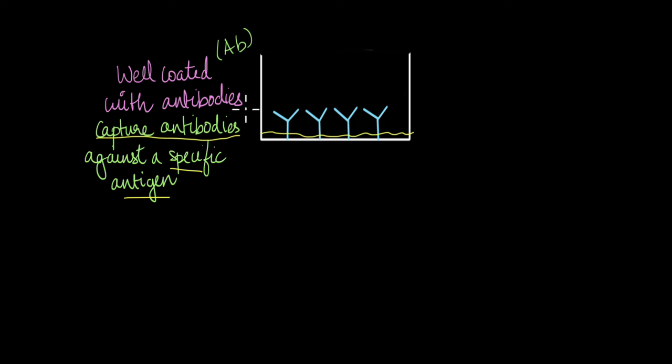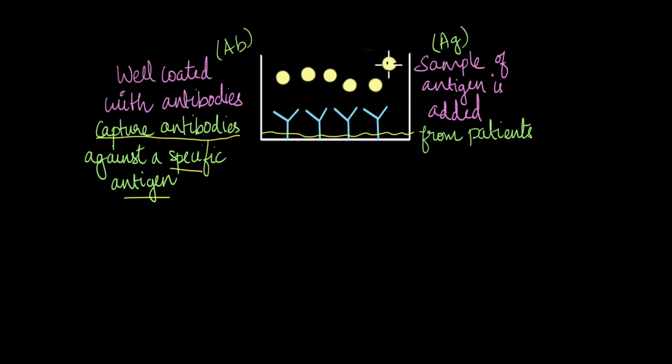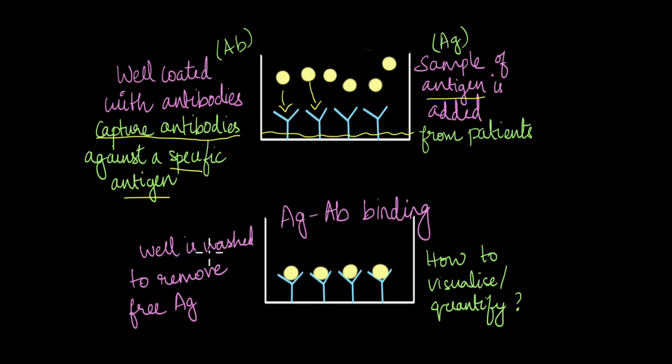Once the well is coated with the capture antibodies, we're going to add our sample. The sample could be a blood sample that is potentially going to contain the antigen that we're targeting. So the antigen from the patient, if present, is going to bind with this specific antibody, this capture antibody here. And if the antigen is present, we're going to see the antigen-antibody binding. AB stands for antibodies and AG stands for antigens, by the way.